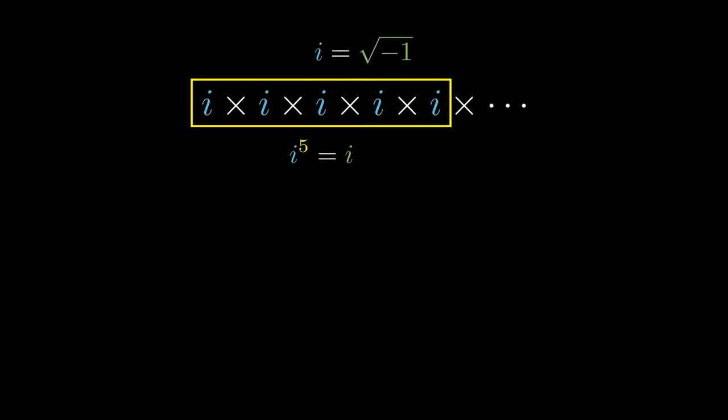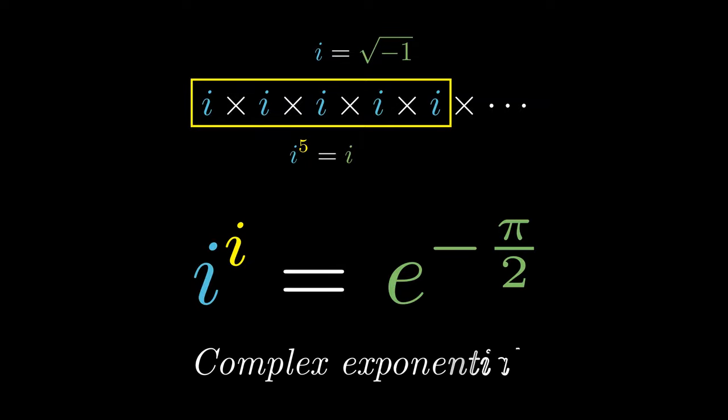Here is the strange question, what is i raised to the i-th power? You might even think that this number is a strange complex number, but this turns out to equal e raised to the negative of pi over 2. Technically, there are a few more answers, which you can explore via complex exponentials.